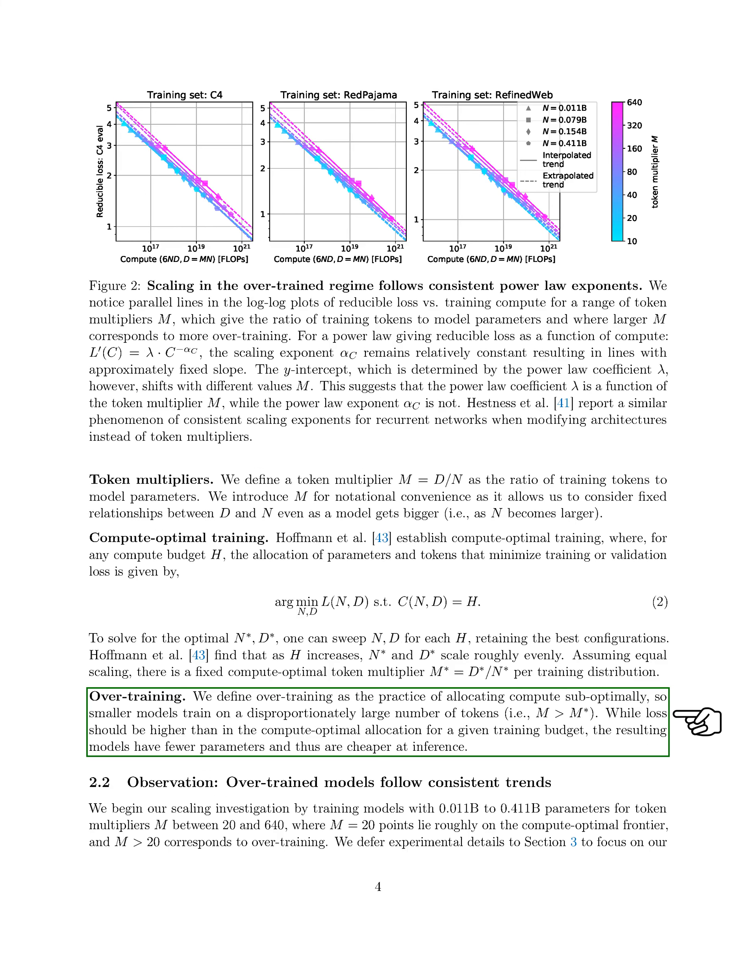Regarding overtraining, we define it as inefficiently allocating compute, leading to smaller models training on a higher number of tokens than optimal. Although the loss may be higher compared to the optimal allocation, these models have fewer parameters and are more cost-effective for inference.